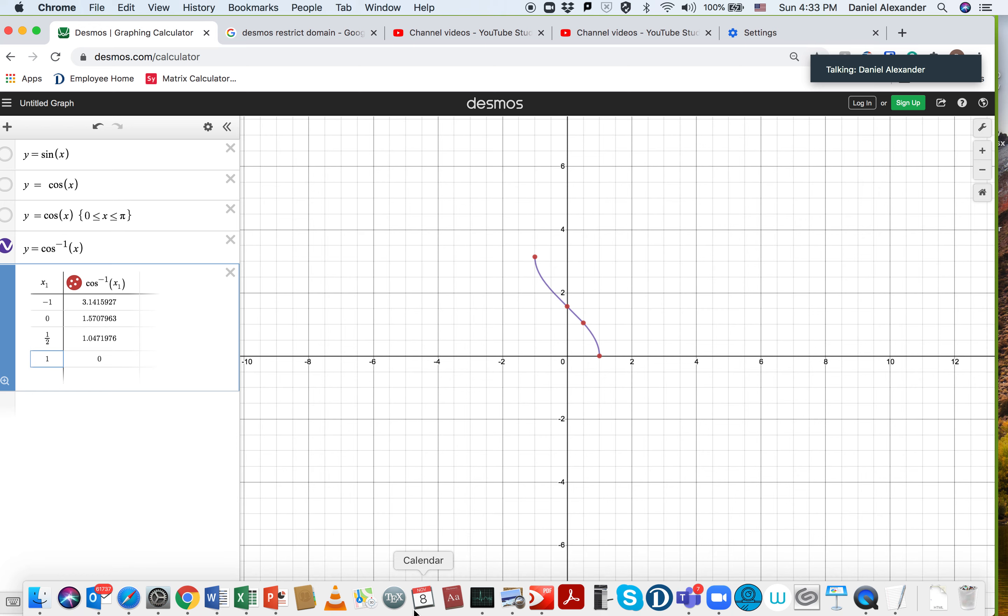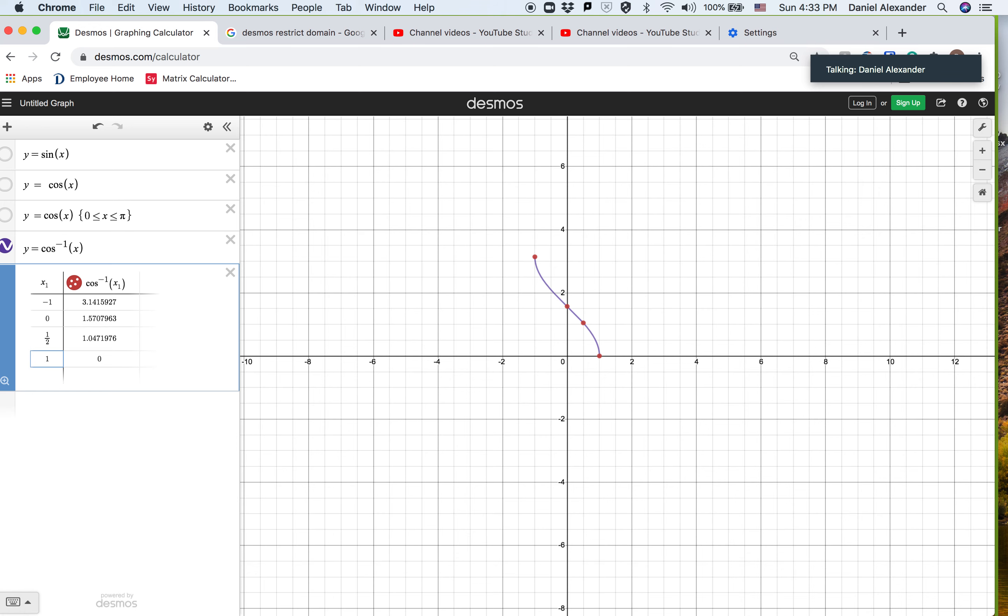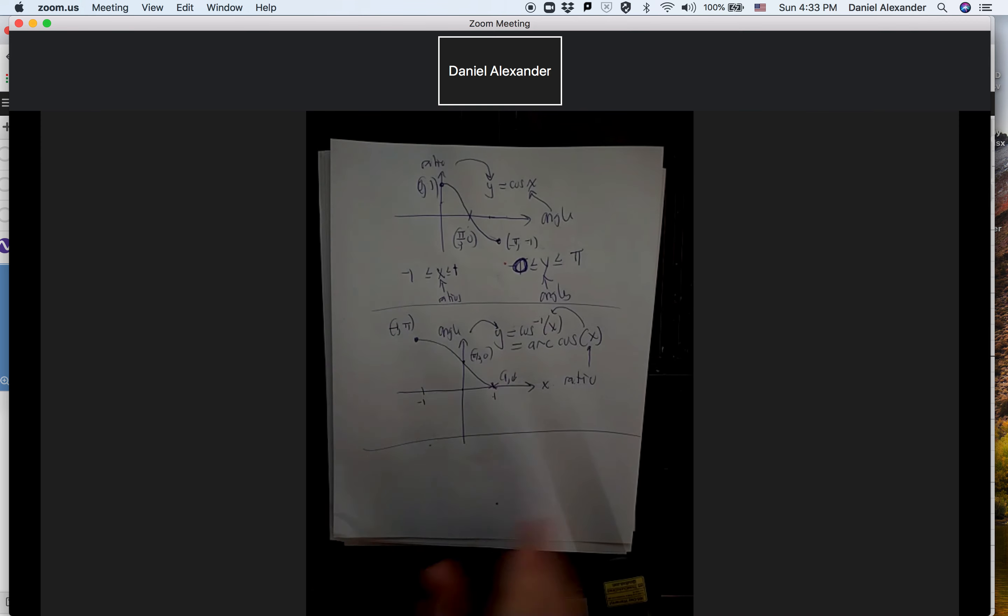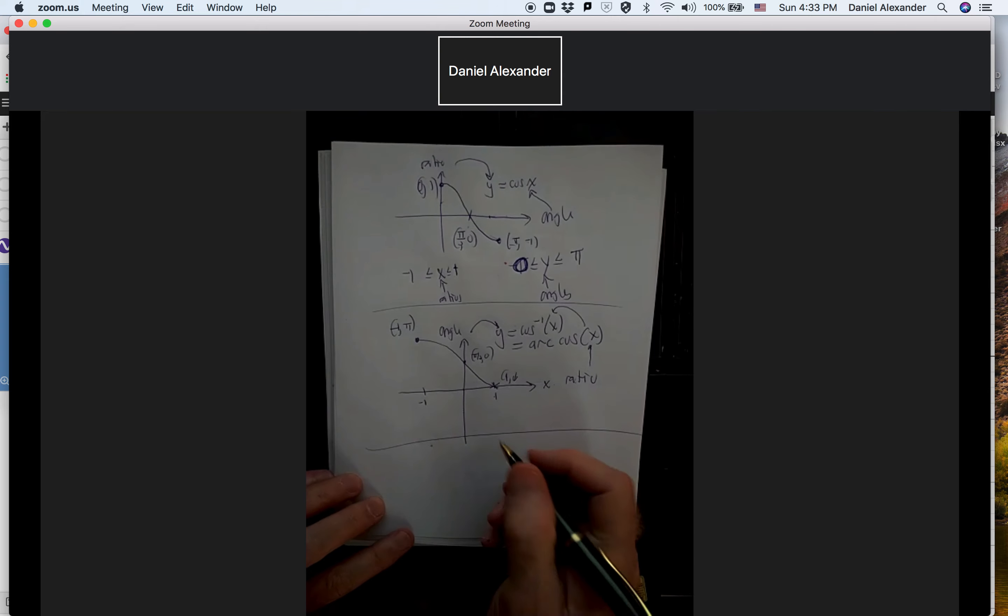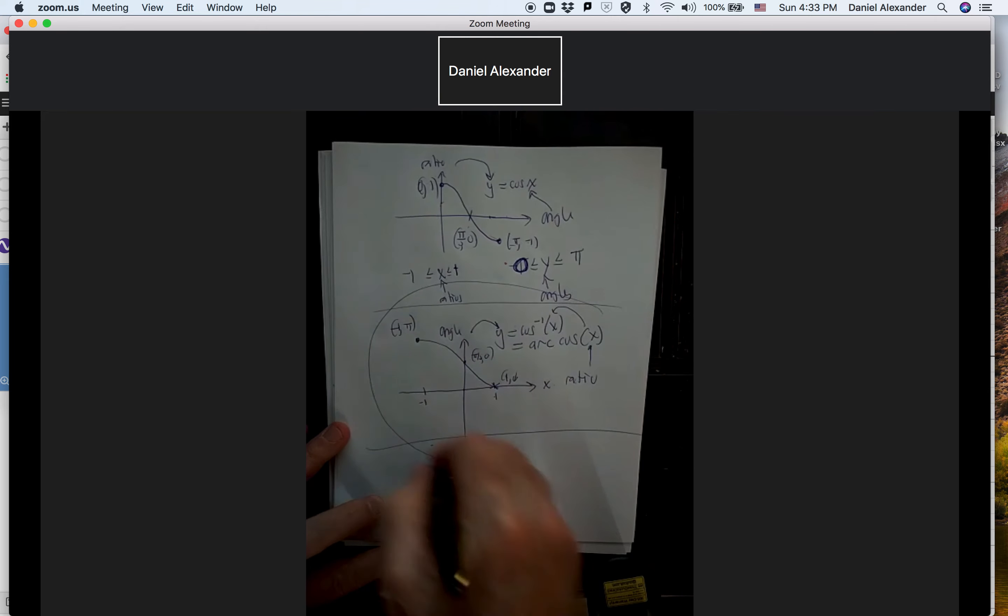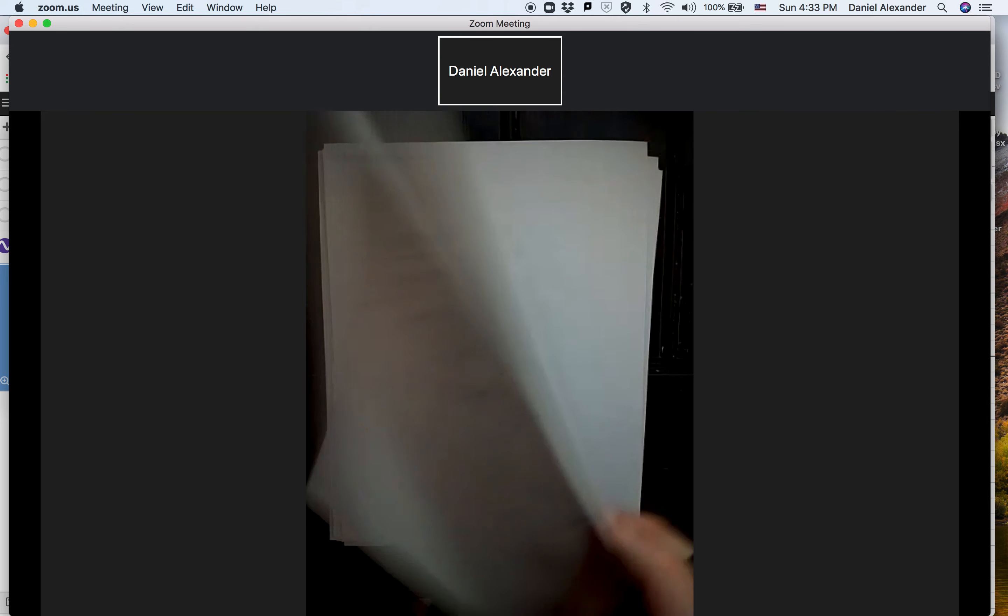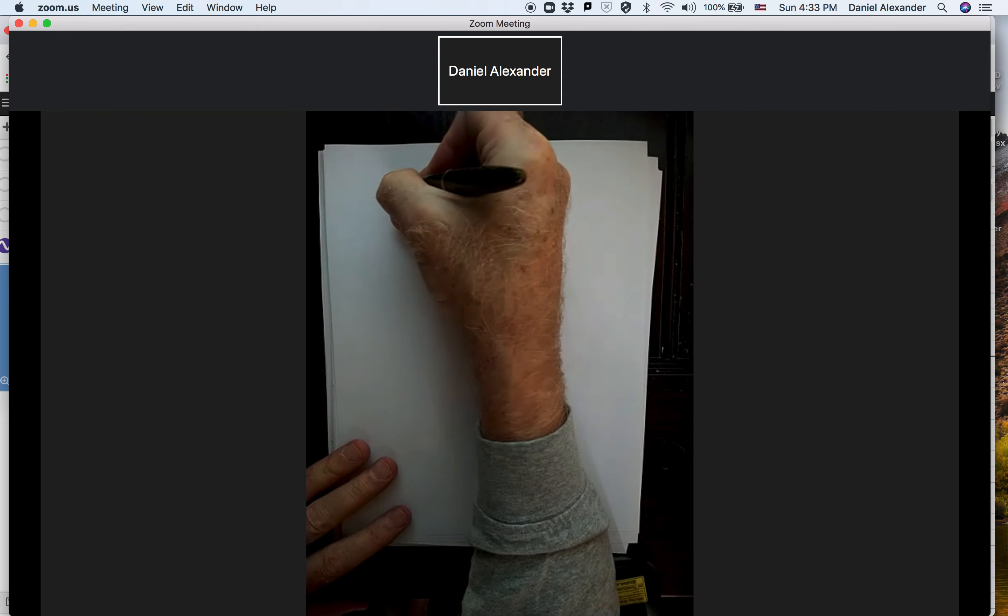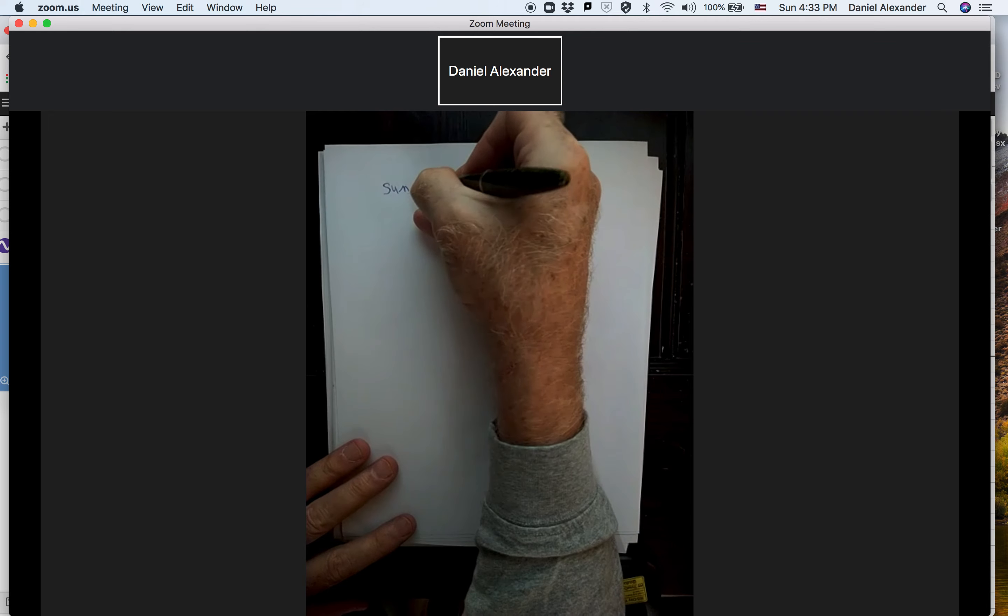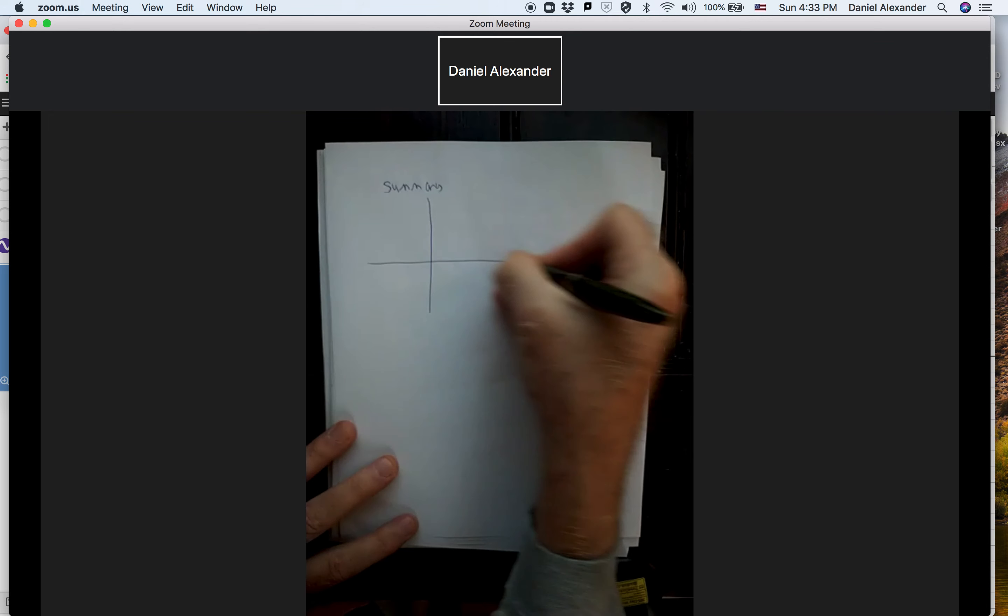So I'm just going to go back and do a quick summary. And then we'll go on to the tan video. Okay, so again, this is what we had. This is what our cosine inverse looks like. So here's our summary.